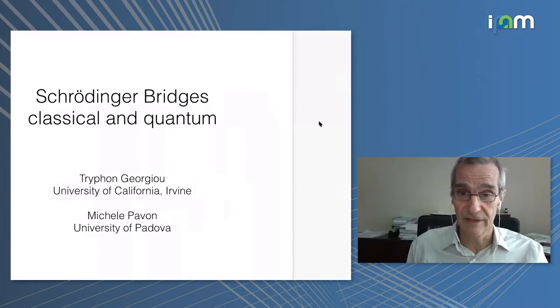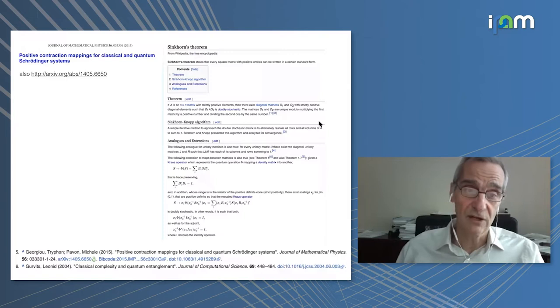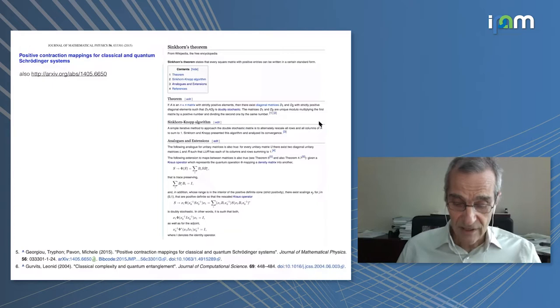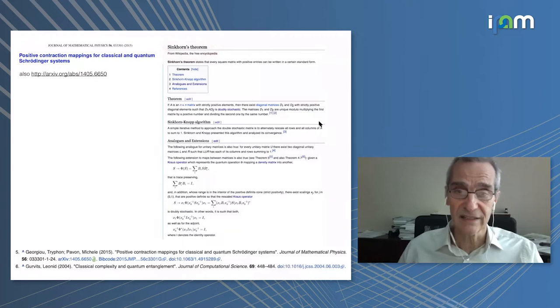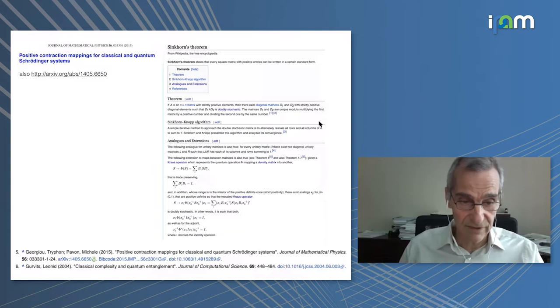This is a joint work with Michele Pavon from the University of Padova. The presentation is based on a joint paper which is positive contraction mapping for classical and quantum Schrödinger systems. It relates to a well-known theorem in statistics, the Sinkhorn theorem, and there is some discussion in Wikipedia which I helped write. The relevance of the Sinkhorn, I will be talking later on, the quantum version.